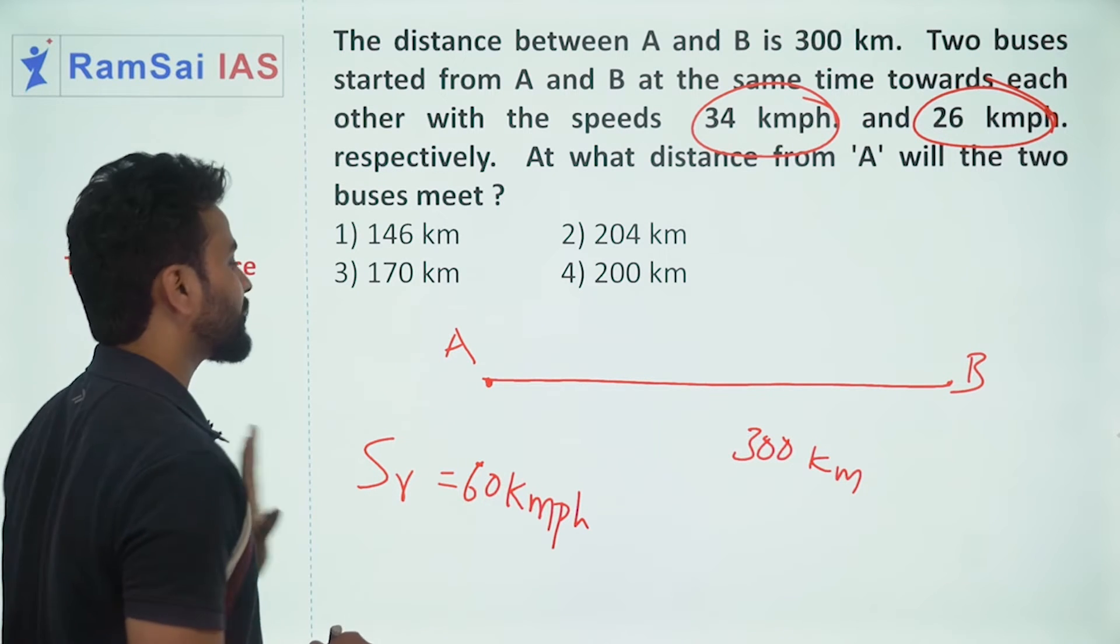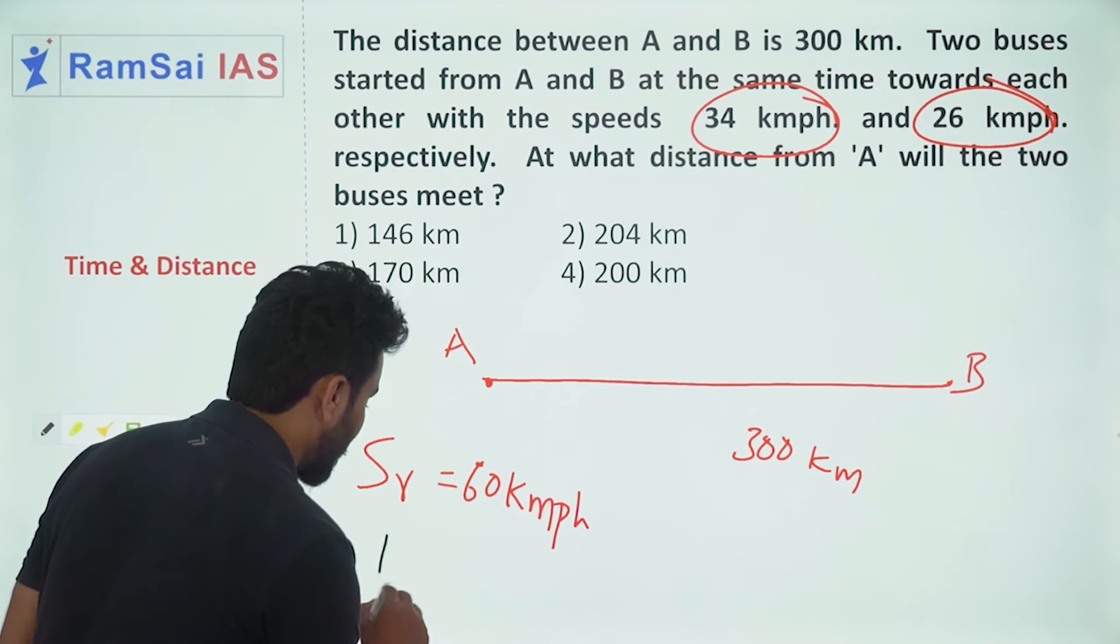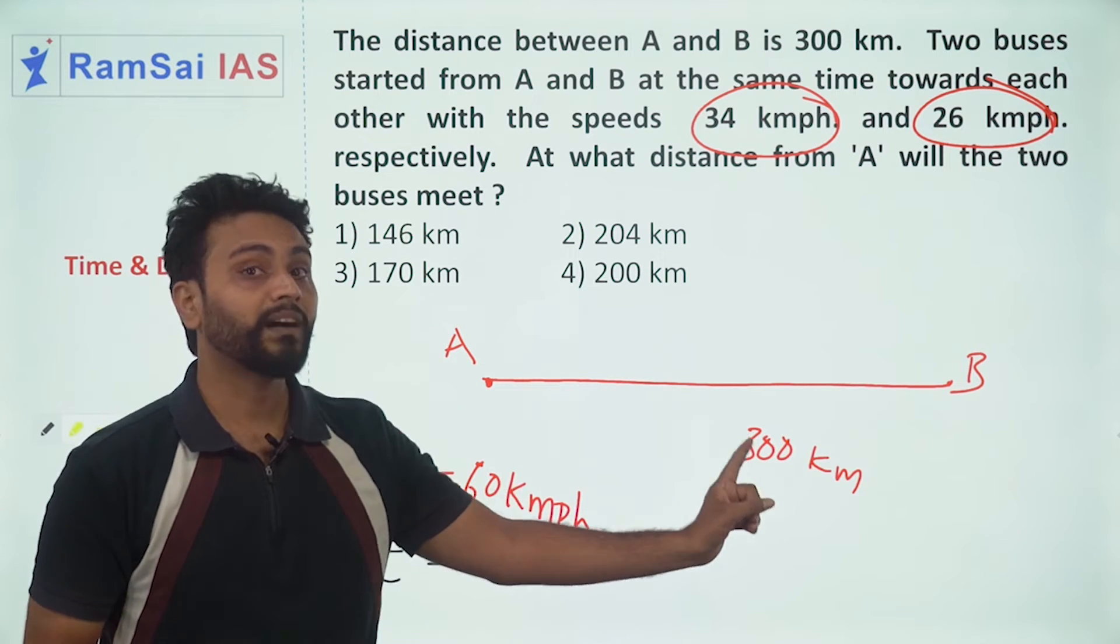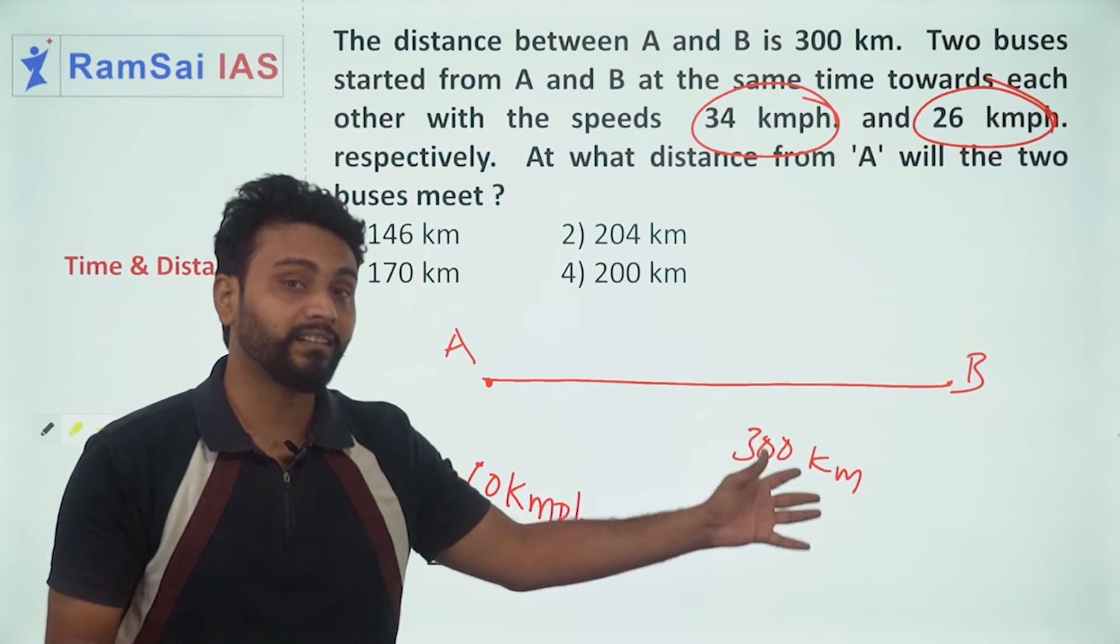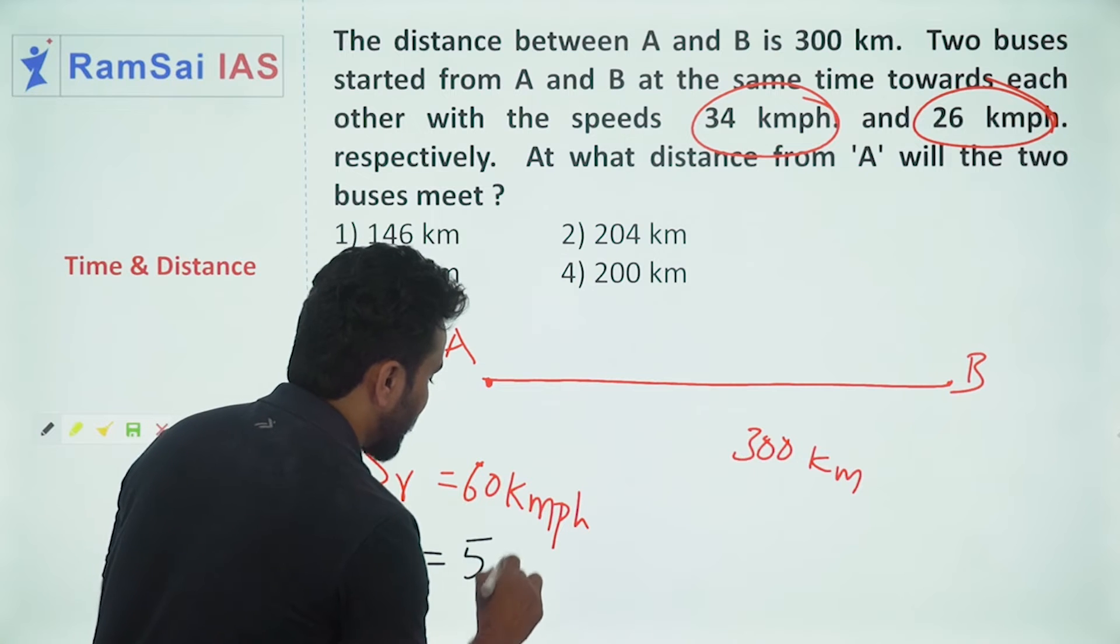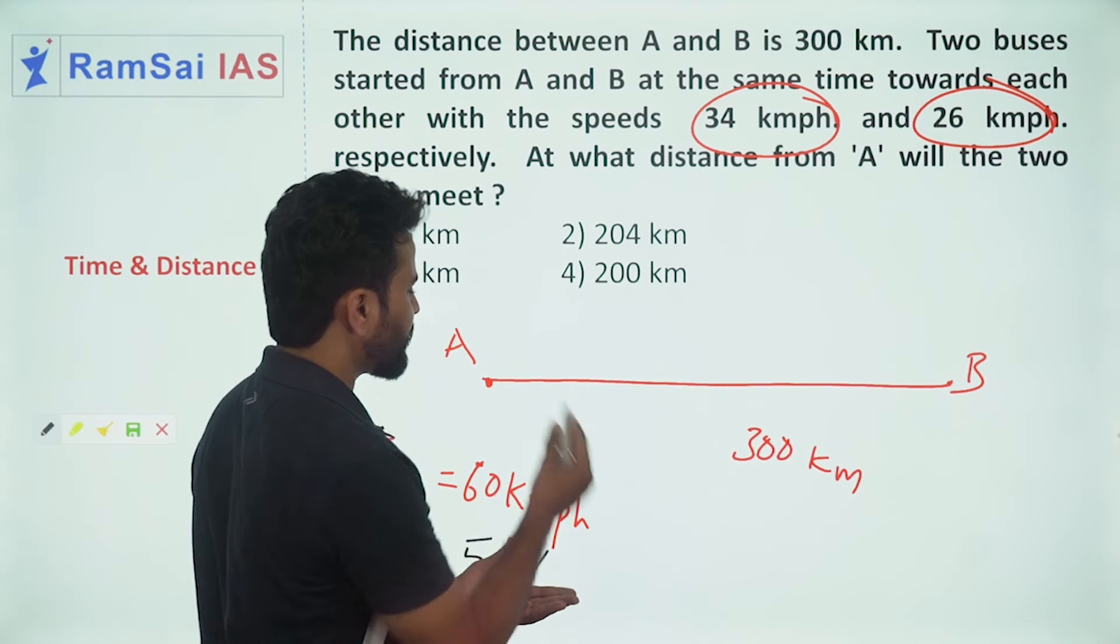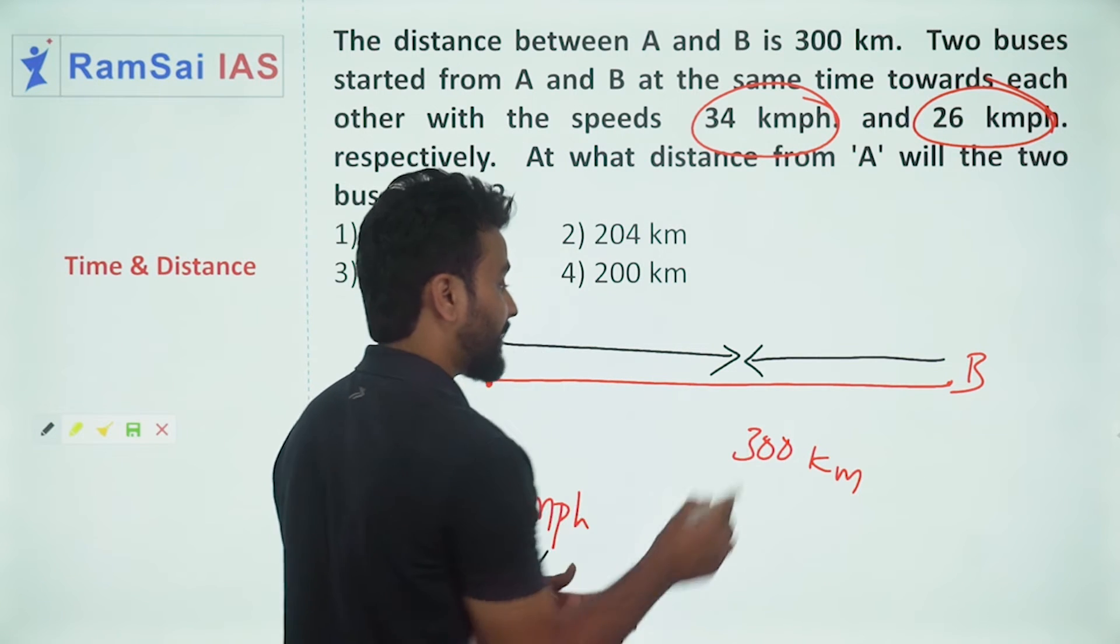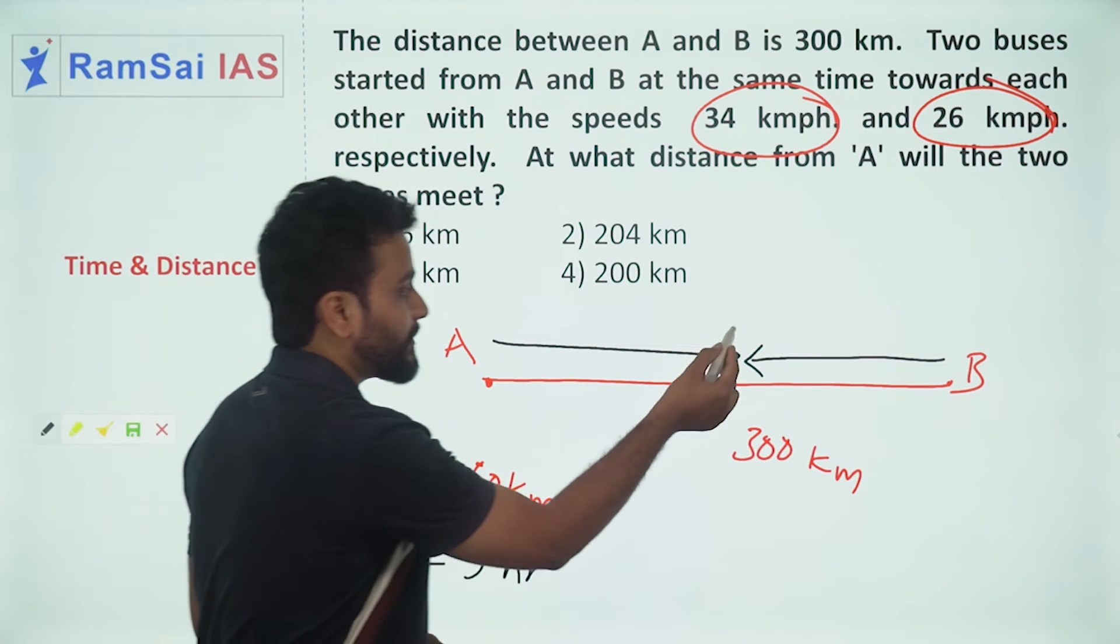So the time period to meet each other is 300 upon 60, which gives you five hours. So in five hours I don't know how much distance the first bus traveled and the second bus traveled, but exactly after five hours they will meet each other.